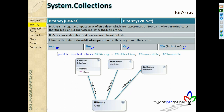BitArray can store an array of bits and perform bitwise operations. It supports AND, NOT (negation), OR, and XOR (exclusive OR). The NOT operation flips each value — if true, it becomes false, and if false, it becomes true. That's called a negation operation.